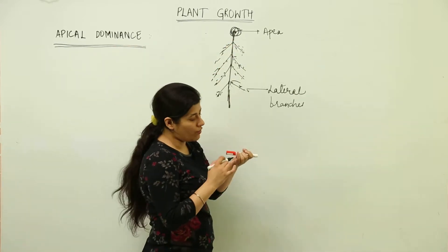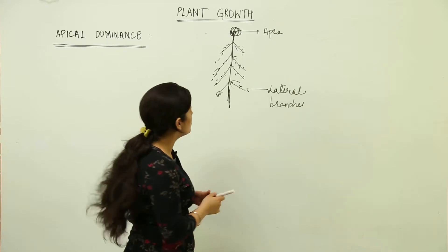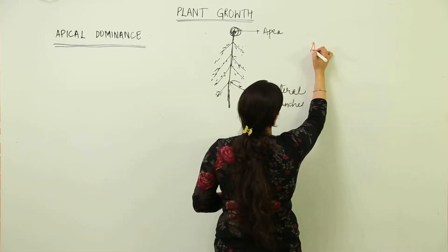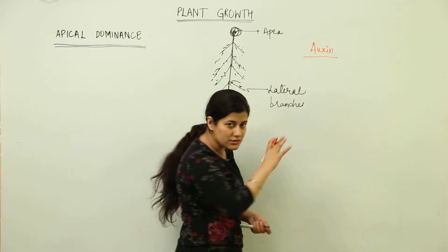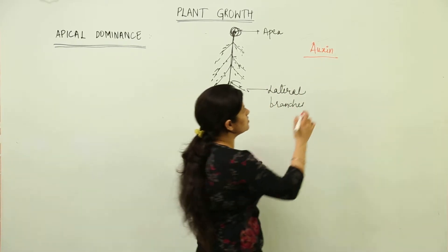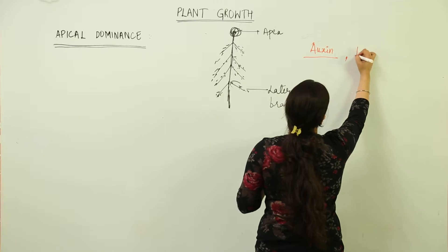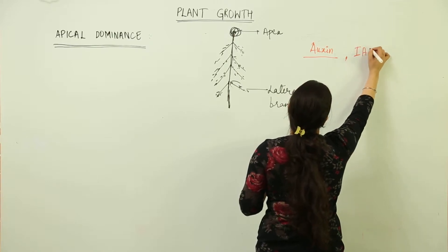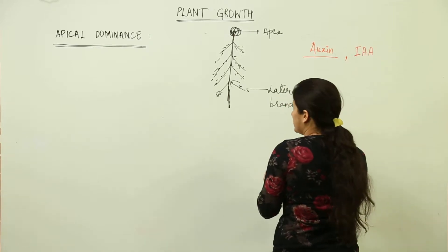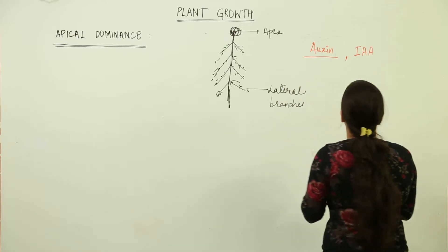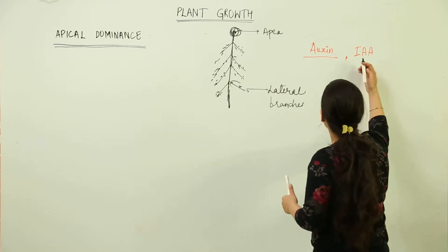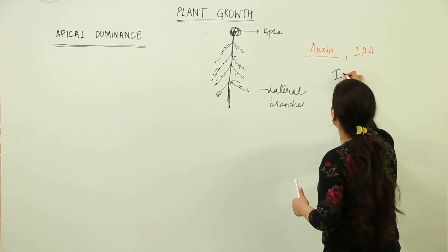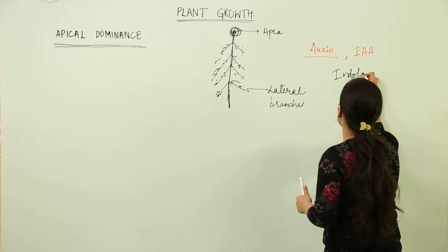This apex is often rich in auxins. Auxins - it is again a phytohormone which we have discussed. The auxin responsible for apical dominance, where growth of apex is greater in comparison to lateral branch growth, is controlled by an auxin known as indole acetic acid.